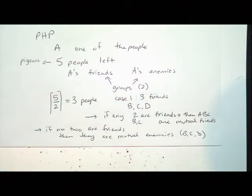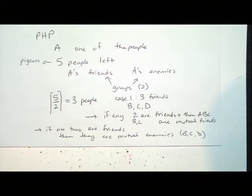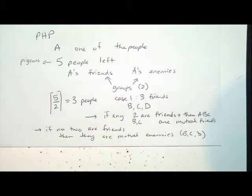So we've broken it down: if the three people in the group of five are all friends of A, then either two of them are friends with each other — giving three mutual friends — or none of them are friends, giving three mutual enemies. There's a mirror case for case two where there are three of A's enemies: just reverse the words 'enemy' and 'friend' and you prove the other case. This is similar to a tree diagram in that we're breaking down all cases step by step.